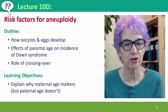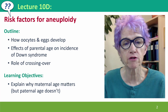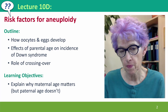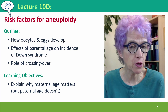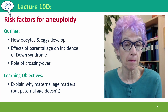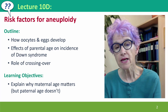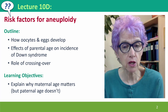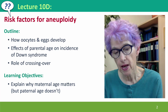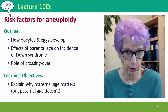Hi, everyone. Welcome to lecture 10D of Useful Genetics, where we're continuing our discussion of aneuploidy by now considering the risk factors. We'll start by talking about how oocytes and eggs develop in female mammals, especially people, and the effects of parental age, maternal age, on the incidence of Down syndrome, and we'll then consider the role of crossing over in aneuploidy.